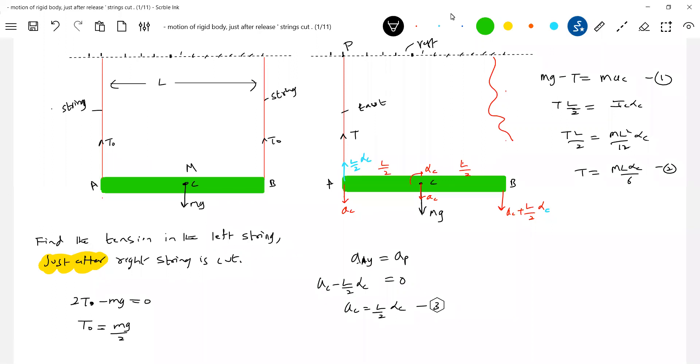Solving this, we will get the required answer. L alpha C equals 2 AC. Put 3 into equation: M by 6 times 2 AC equals M by 4. Mg minus T equals 3T. Or T equals Mg by 4. So this will be the tension in the string just after cutting.